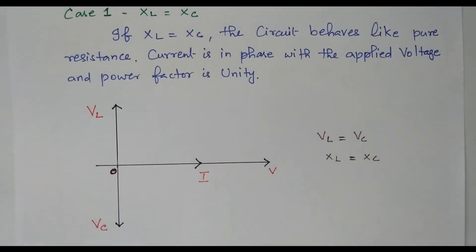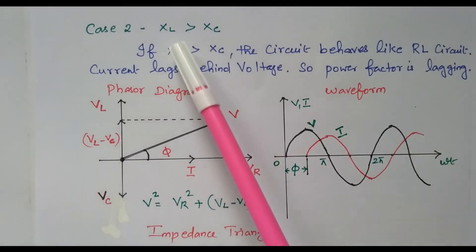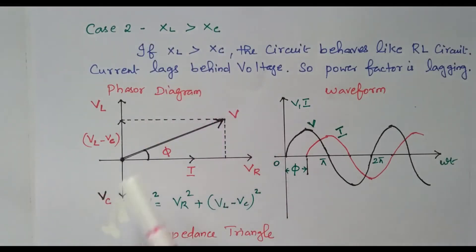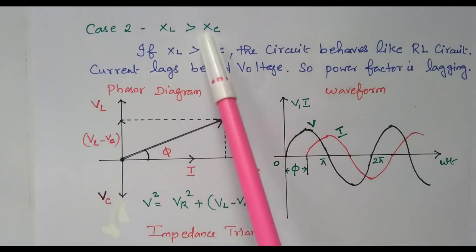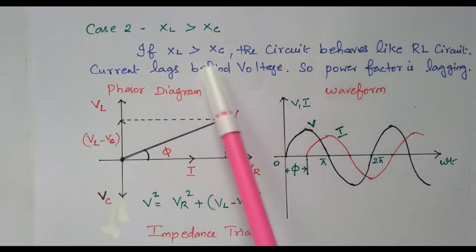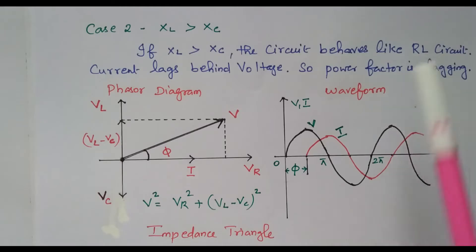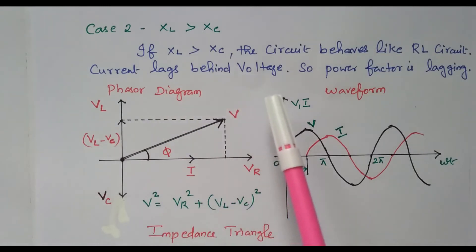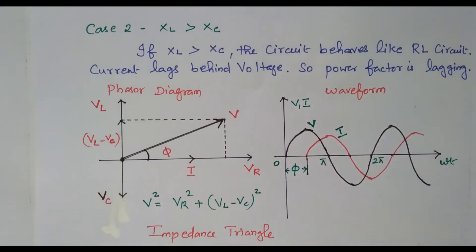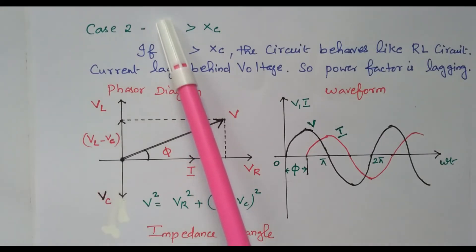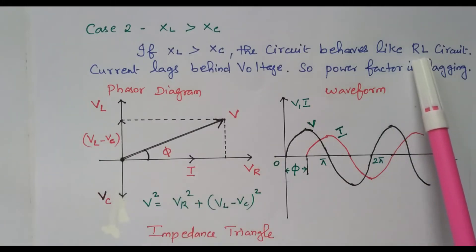Now Case 2: Xl is greater than Xc — inductive reactance is more, capacitive reactance is lesser. In this case, the circuit acts as an RL circuit. Because of the greater inductive reactance, it acts as an inductive circuit, meaning current lags the applied voltage. So the power factor is also lagging.